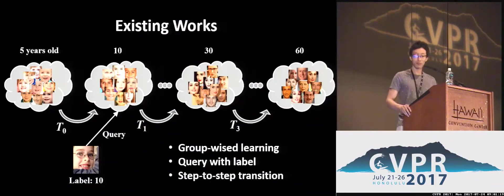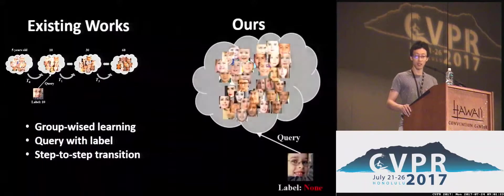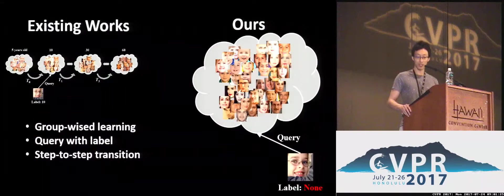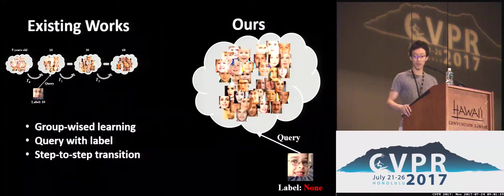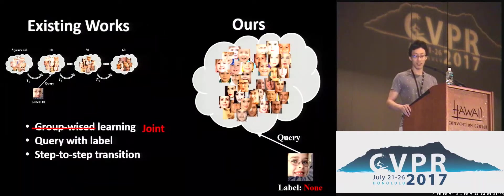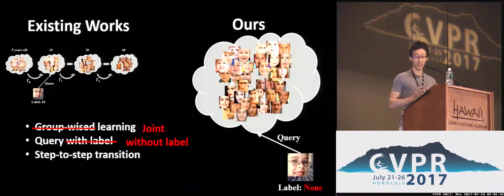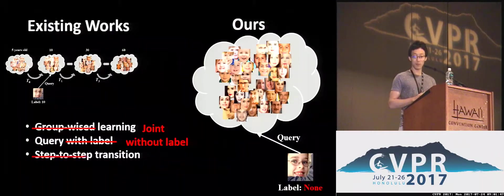Our method learns on the whole dataset and learns a unique model. In the testing stage, the query image will not need a label anymore. Compared with those recent works, the group-wise learning becomes joint learning, and we have relaxed label requirements in the testing stage. Also, we can bidirectionally generate older and younger faces in just one step.